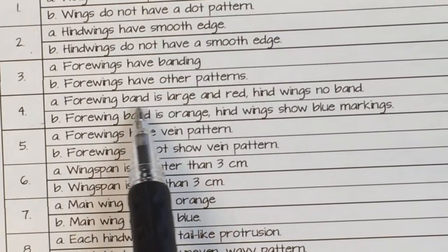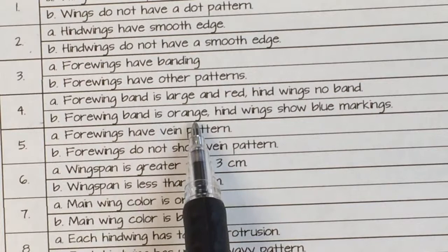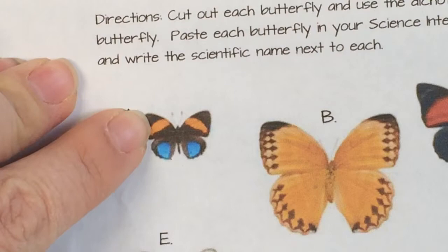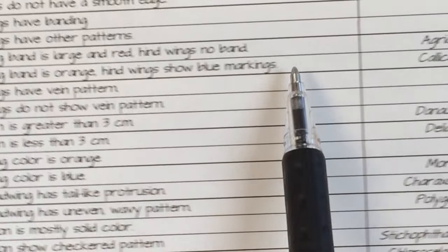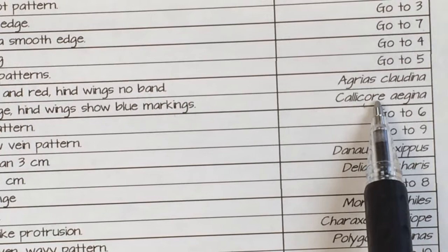So in four: fore wing band is large and red, hind wings no band — or fore wing band is orange, hind wings show blue markings. Alright, so let's go look at them again. The fore wing is orange and the hind wing is blue. So it's the second option in part four. Band is orange, hind wings have blue markings. And we go all the way to the right — we have a name. And so this little butterfly is known as Calichor agena.